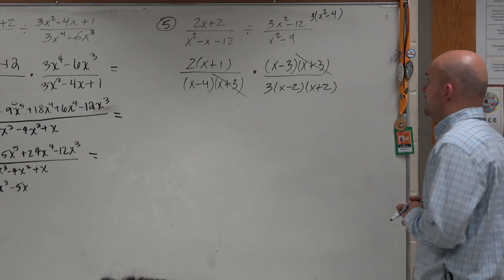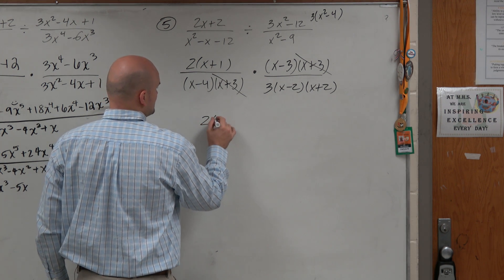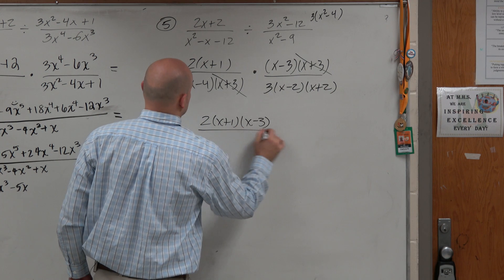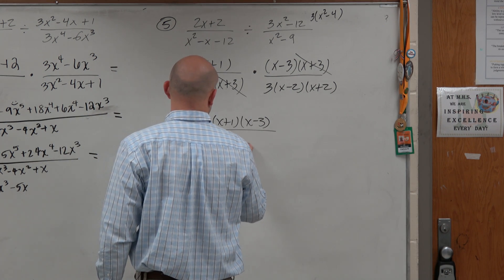Right? Now, can I do anything? The 2 and the 3 don't simplify. So therefore, I'm just left with 2 times (x+1) times (x-3), all over 3(x-2)(x-4).